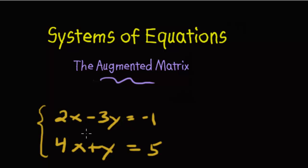Okay, so our system has two equations and two variables. Our first equation, 2x minus 3y equals negative 1. And then we have 4x plus y equals 5. So here's what we're going to do.